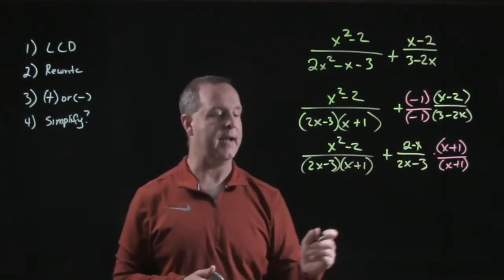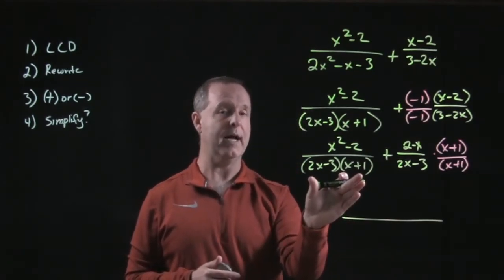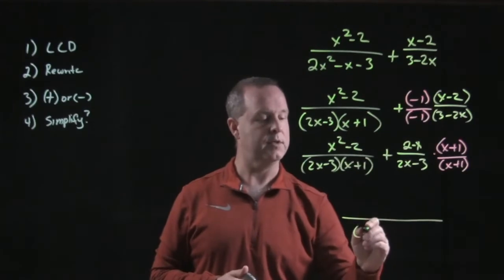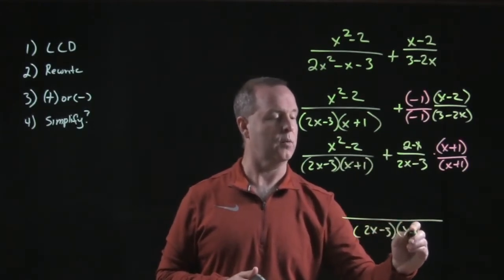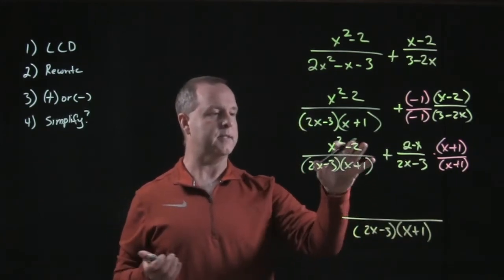Now I can determine the lowest common denominator. Both sides are common with 2x - 3 and x + 1. From there we can clean up the top.